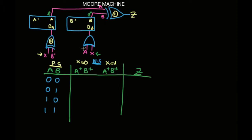So we have A=0, B=0, and X is 0. B prime here is going to be 1. So 0 XOR 1 gives you 1. All 0 gives you 0. 1 XOR 0 gives you 1. So our next state for A, which is A plus, gives you 1 when X equals 0. And for B, which is B plus, gives you 0.